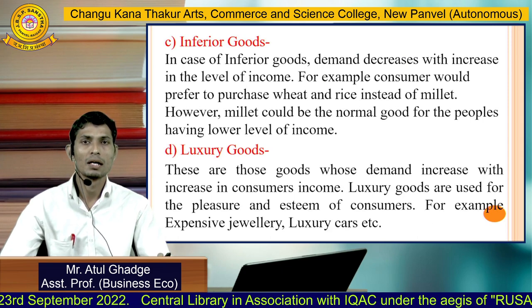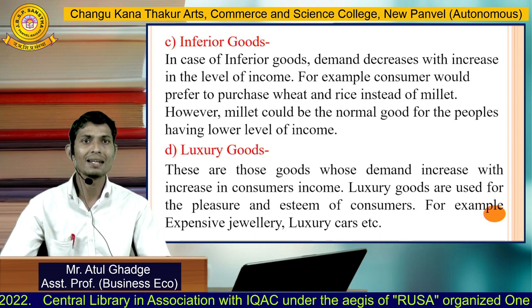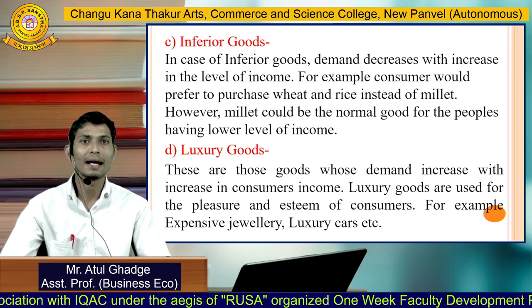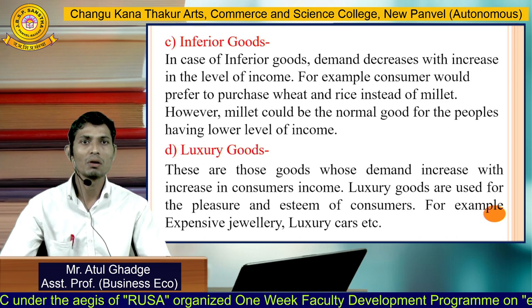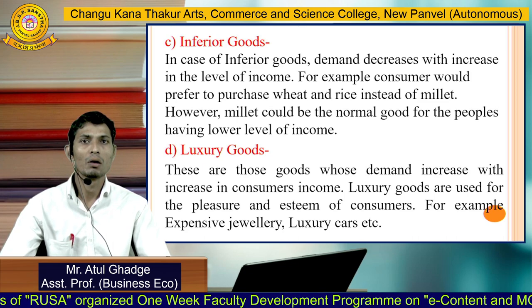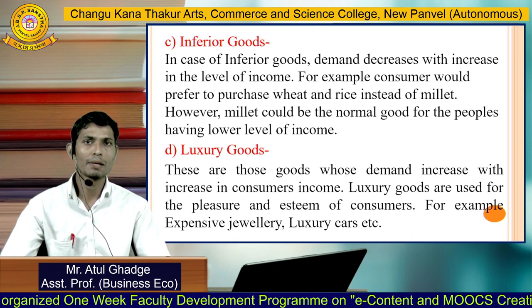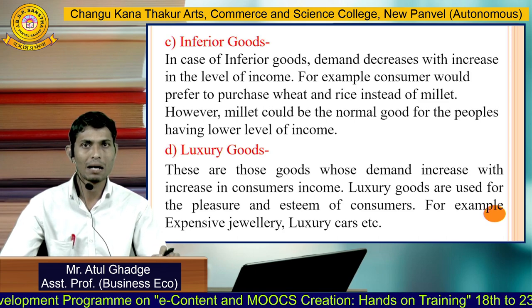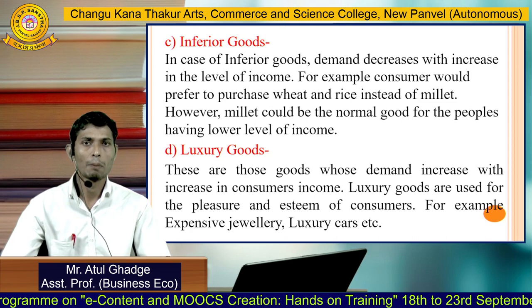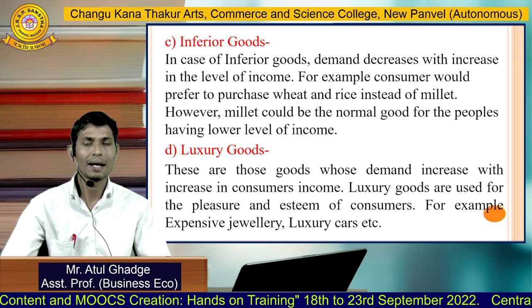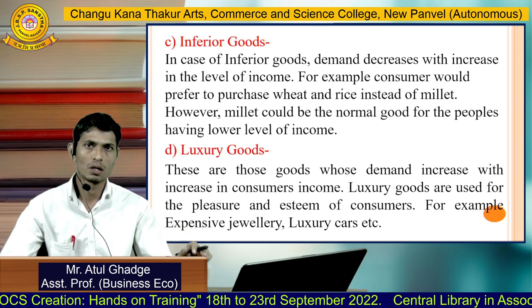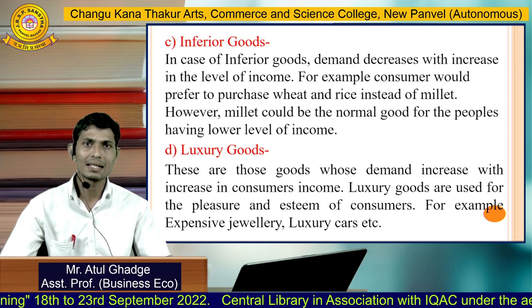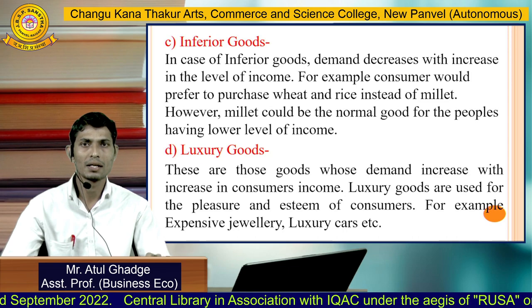Third is inferior goods. In the case of inferior goods, demand decreases with an increase in the level of income. For example, a consumer would prefer to purchase wheat and rice instead of millet; however, millet could be a normal good for people with a lower level of income. When my income is less, I consume inferior goods like Bajra. But when my income goes up, I shift my demand from Bajra to wheat or some superior quality goods. So inferior goods are those whose demand decreases as income increases, because people shift to superior goods.